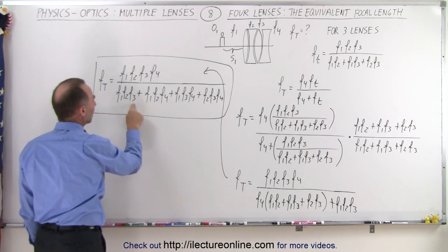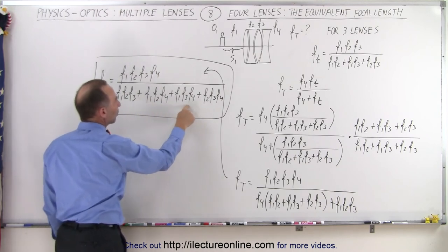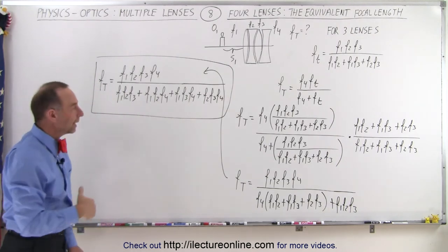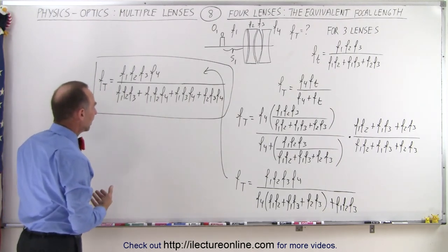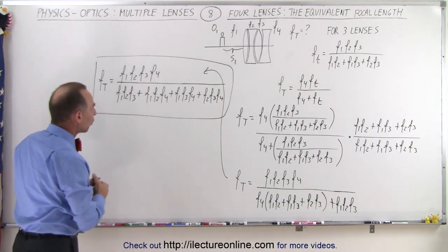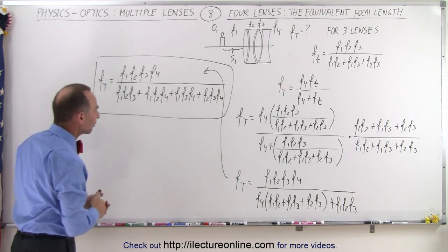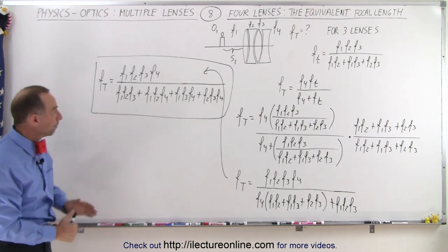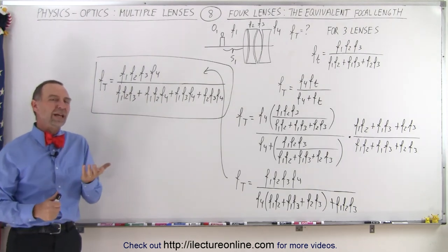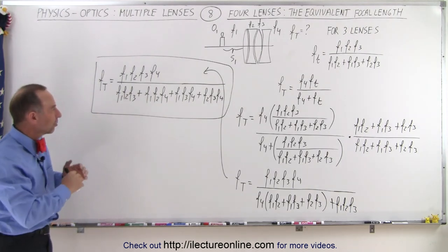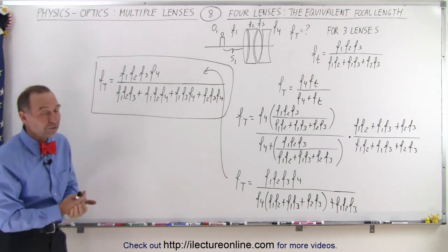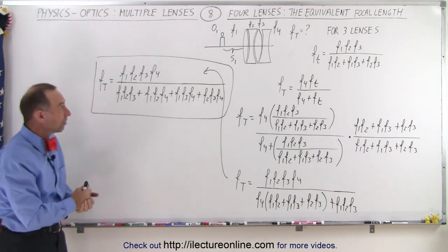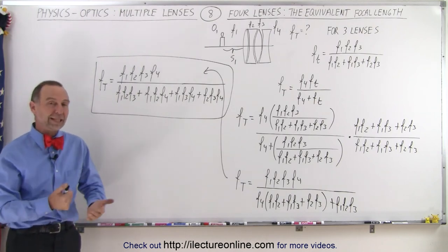So you start with one two three, then one two four, then one three four, and then two three four. So the four possible combinations without any repetition. And so that's how you end up with a four-lens system, the equivalent focal length for a four-lens system. And that's kind of the way you want to order them. And now we'll do a general case in one of the next videos so you can see how you can build it up to any number of lenses to come up with a simple way of expressing the equivalent focal length. And that's how it's done.